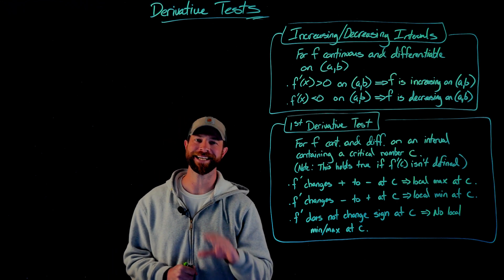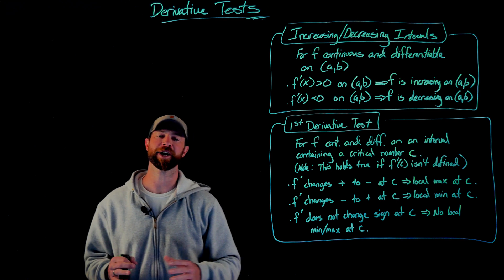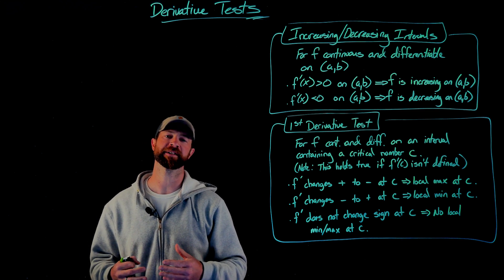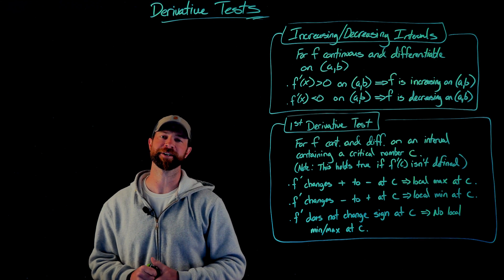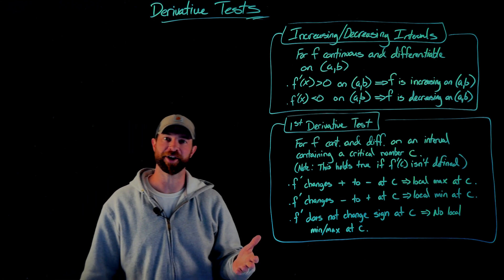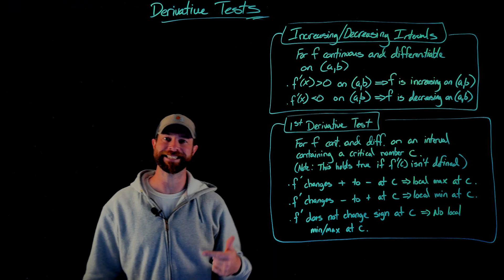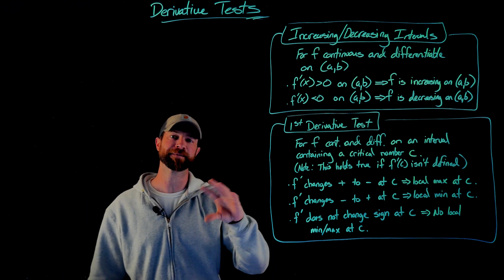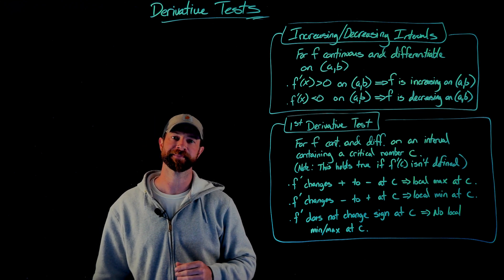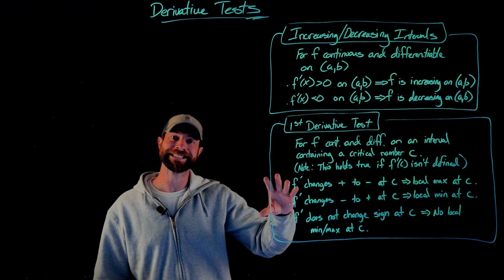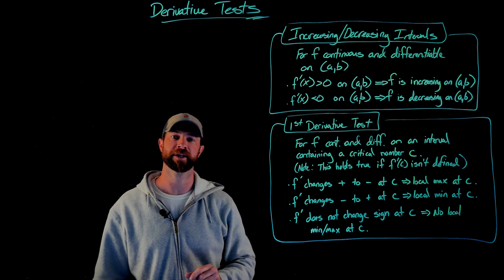In this video, we're going to introduce the first of the two derivative tests. We're also going to talk about how to analyze the first derivative to determine whether your function is increasing or decreasing on certain intervals. To get us started, I've placed how to use the first derivative to find increasing and decreasing intervals, and then our test for using the first derivative to find local max and local mins. I'll go through these explanations and do a couple examples showing how we're going to implement these concepts.